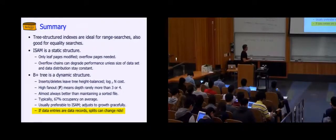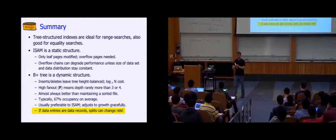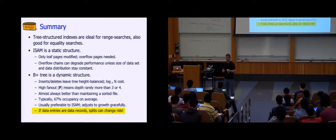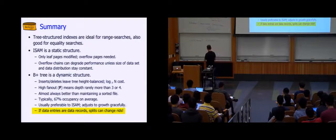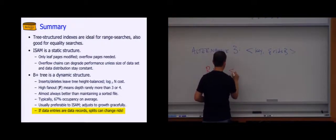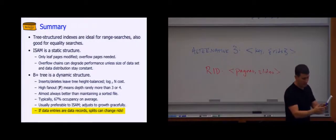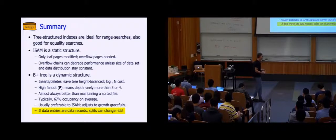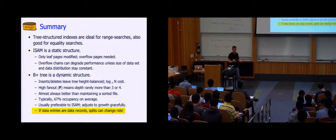Alternative three is a variant of alternative two, which is key comma set of RIDs, which deals with duplicate keys a little more compactly. Now, if your data entries are data records — that is, alternative one — what happens when you split a leaf page? The tuples move around, which means their page ID changes, which means their record ID changes, because record ID is page ID comma slot number. So if you split a B-tree in alternative one, things change page numbers, which means all pointers into that alternative one B-tree have to be updated — which is expensive.